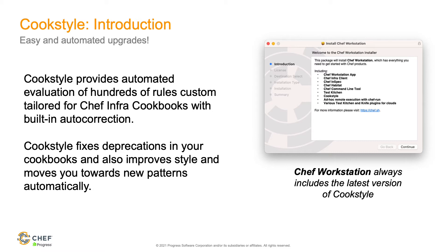So, all about Cookstyle. What exactly is Cookstyle? It's really about automating the maintenance of your cookbooks — taking the chore of keeping your cookbooks up-to-date away and making that something you can do automatically. Cookstyle provides an automated evaluation system for hundreds of different custom rules created just for Chef Infra, and best of all it includes built-in auto-correction. It fixes deprecations, improves the style of your cookbook code, and helps you migrate to new roles and patterns automatically.